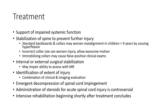Treatment includes support of impaired system function and stabilization of the spine to prevent further injury. Internal or external surgical stabilization, identification of the extent of fracture or injury, and imaging-guided decompression of spinal cord impingement are key steps. Administration of steroids for acute spinal cord injury is controversial. Intensive rehabilitation should begin shortly after treatment concludes.